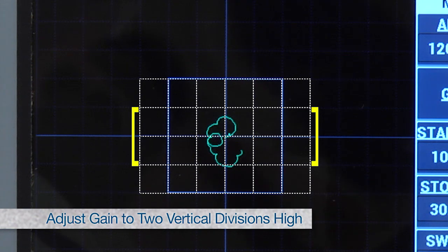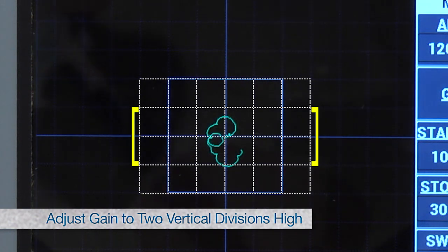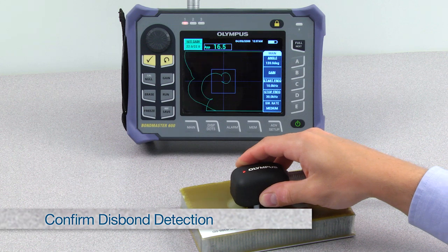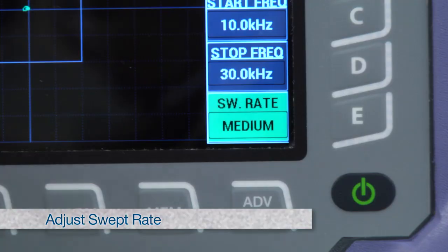Ideally, adjust the signal to two divisions. Scan the disbond and validate the detection. Adjust the swept rate as needed.